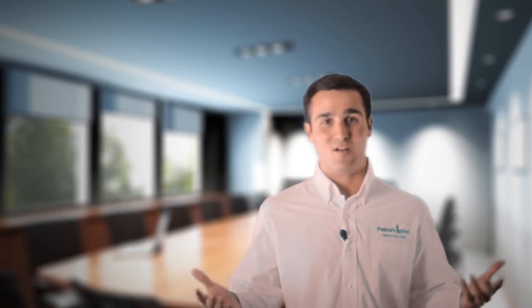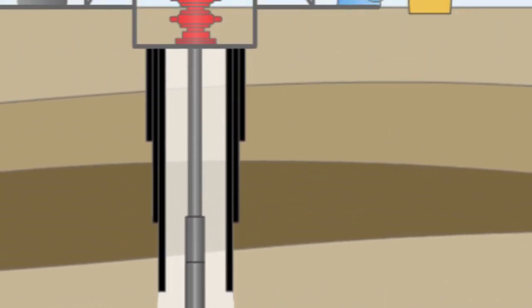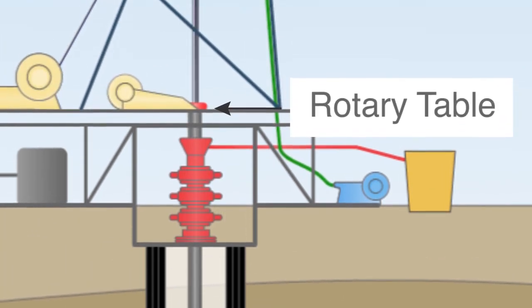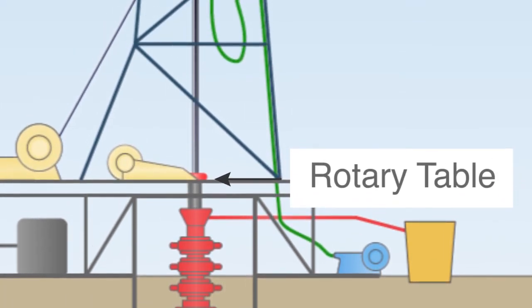You may ask, why more money? Well, the drill bit located at the end of the drill string is a tool used to cut through the rock with teeth-like structures that rotates by use of a rotary table.